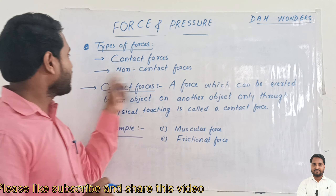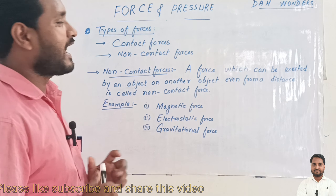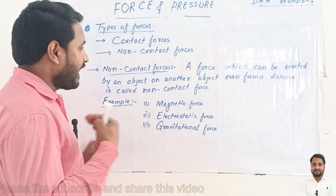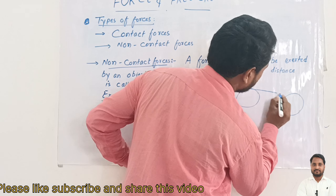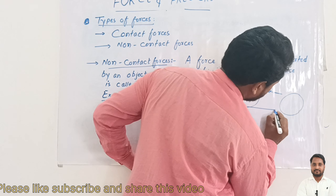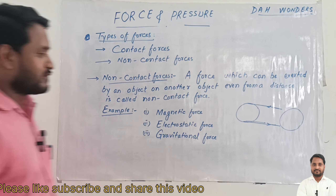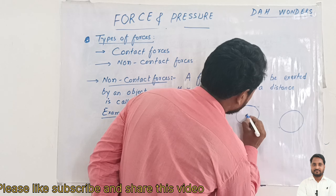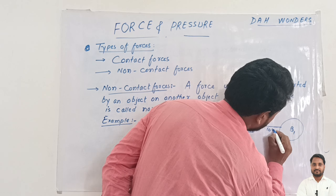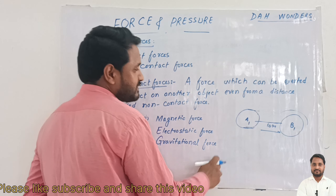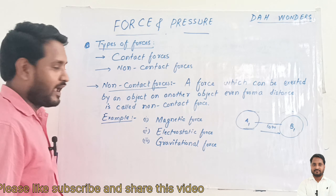Next, we discuss non-contact forces. A force which can be exerted by an object on another object even from a distance is called a non-contact force. There is no physical touching required. For example, object A and object B can be 10 or 20 meters apart, and force — either attraction or repulsion — can still act between them. Examples of non-contact forces are magnetic force, electrostatic force, and gravitational force.